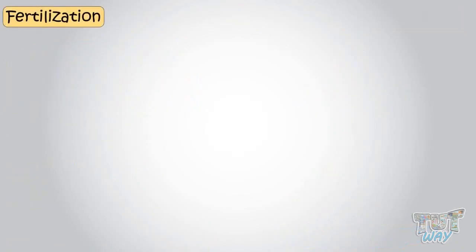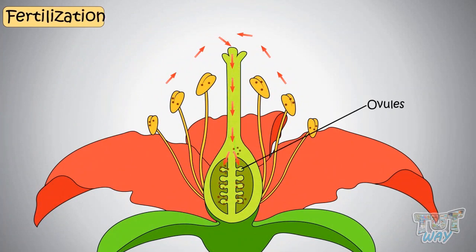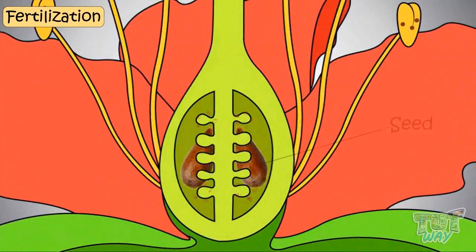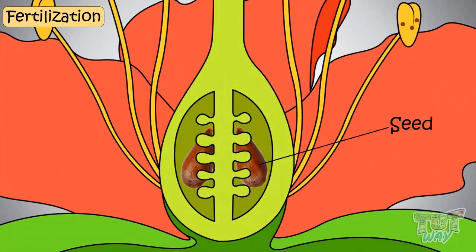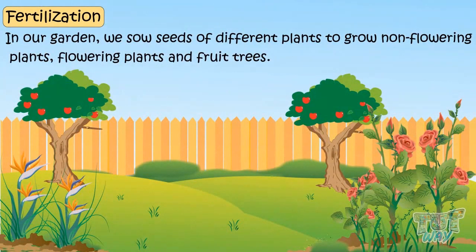The process by which pollens, after reaching the stigma of pistil, reaches the ovules present in ovary is called fertilization, which leads to the formation of seeds. And these seeds are sown in mud to grow new plants. In our garden, we sow seeds of different plants to grow non-flowering plants, flowering plants and fruit trees.